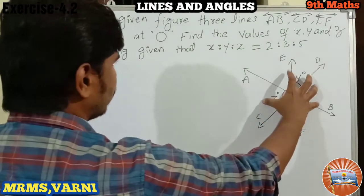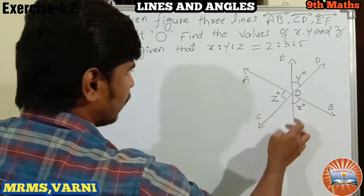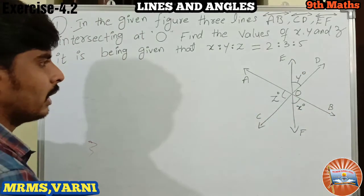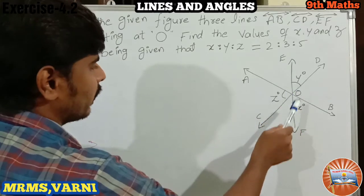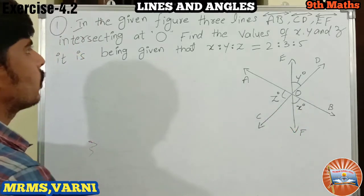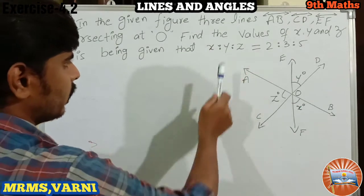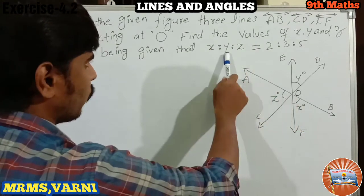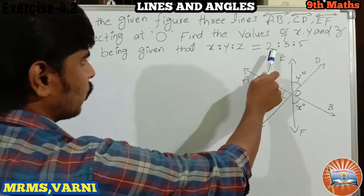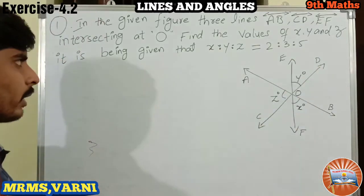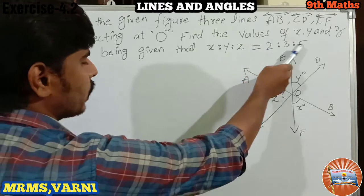So, given this figure, AB, CD, and EF are three straight lines intersecting at a point O. We have to find the angles X, Y, Z given the ratio X is to Y is to Z equals 2 is to 3 is to 5.